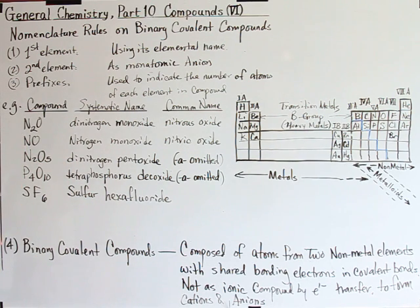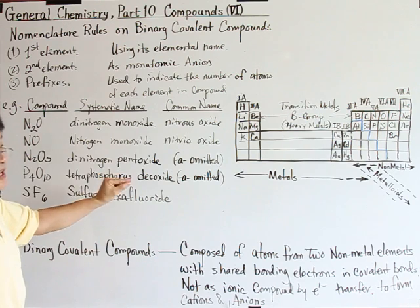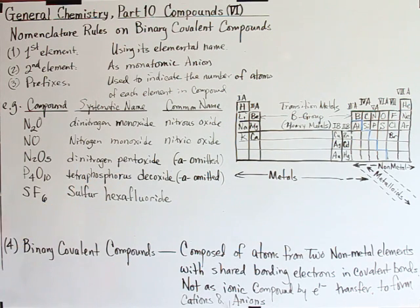And number four, P4O10, the ten oxygen is deca. The same token, deca, the A and O meet each other, two vowels, so we drop A, keep O. So we call tetraphosphorus decoxide.